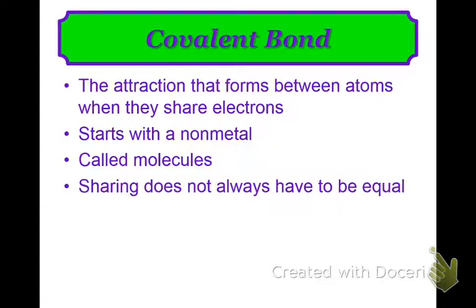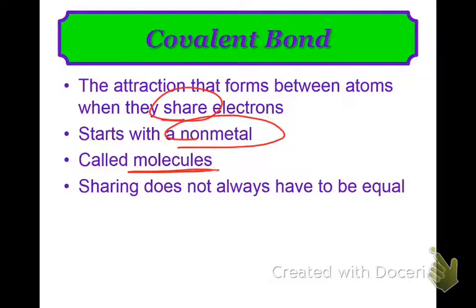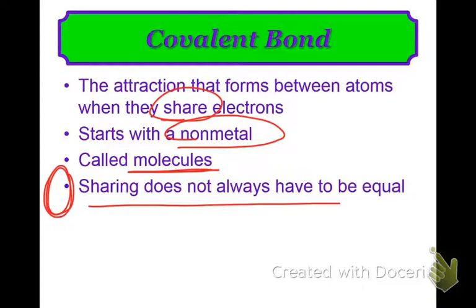Then we have something called a covalent bond — basically where they share electrons. I kind of hate the word share because it's not truly sharing; they are both using that electron, but it is a battle. It's like a tug of war — they are fighting over the electron. Usually covalent bonds start with nonmetals; we also call them molecules, which is where you get the word water molecule from. The sharing does not always have to be equal. Somebody might be pulling a little bit more of the electron depending on the strength of the atom doing the pull.